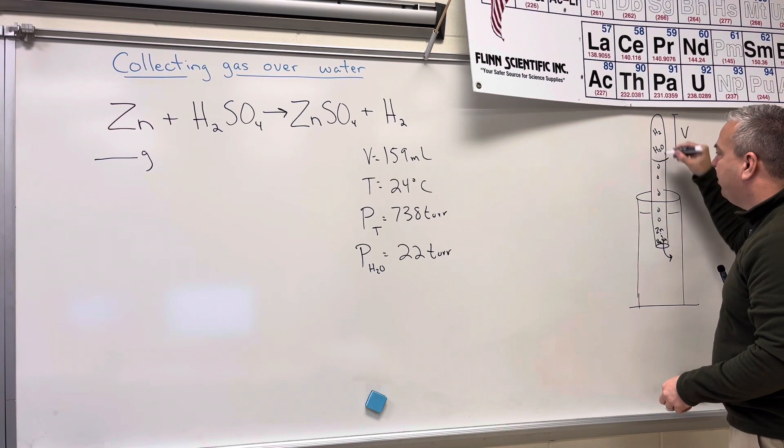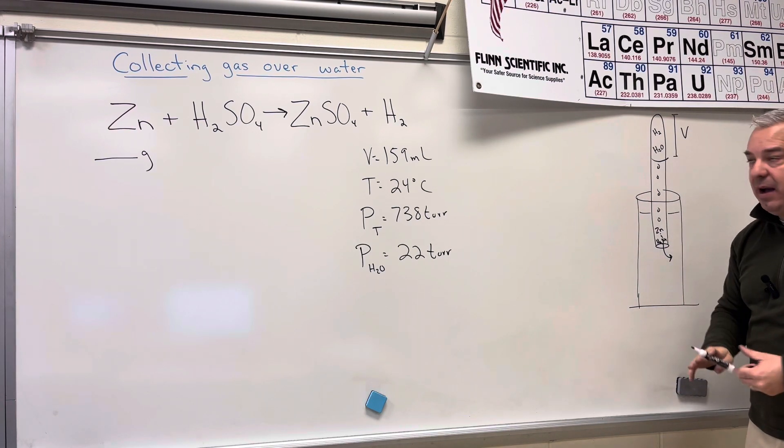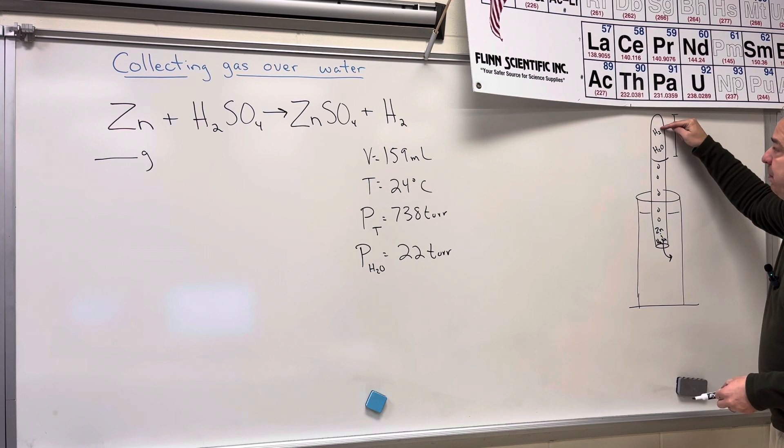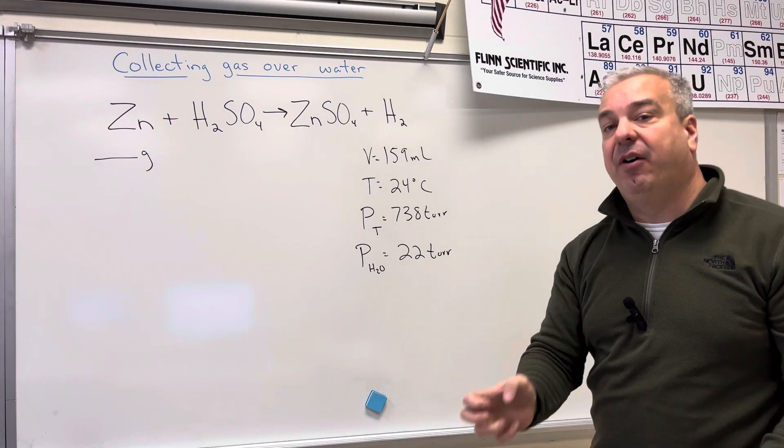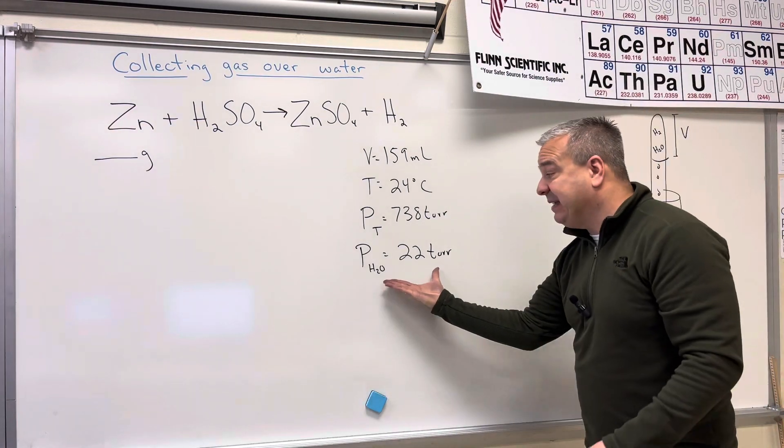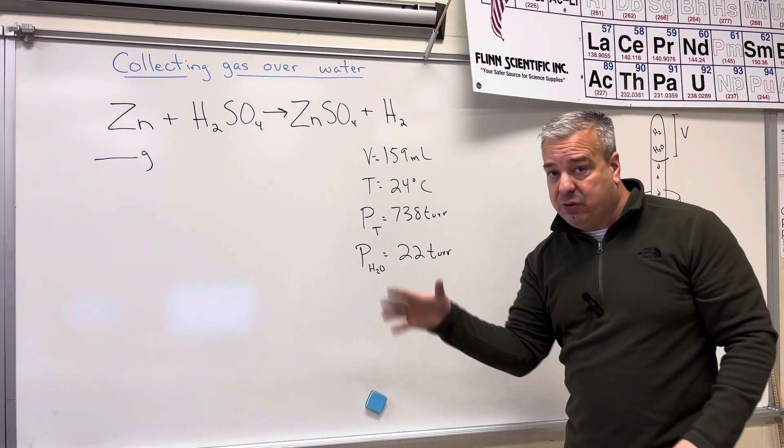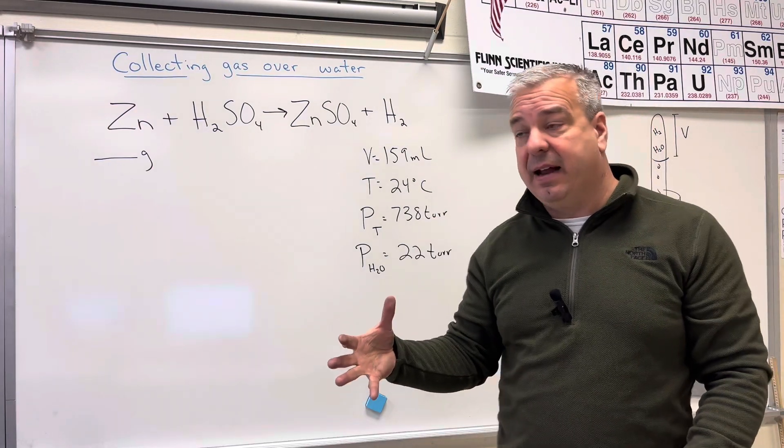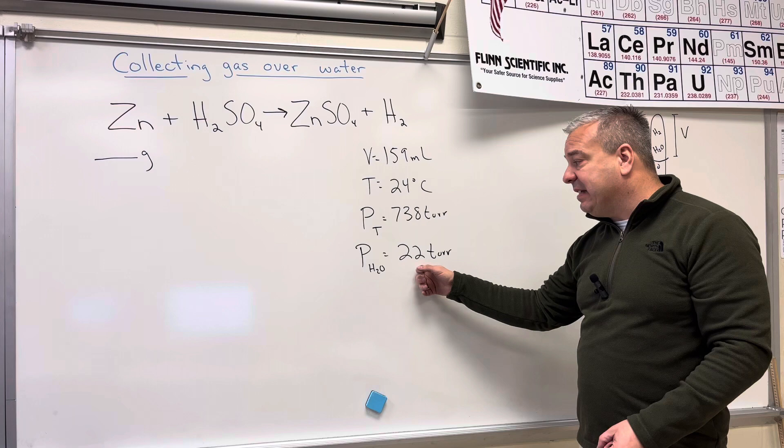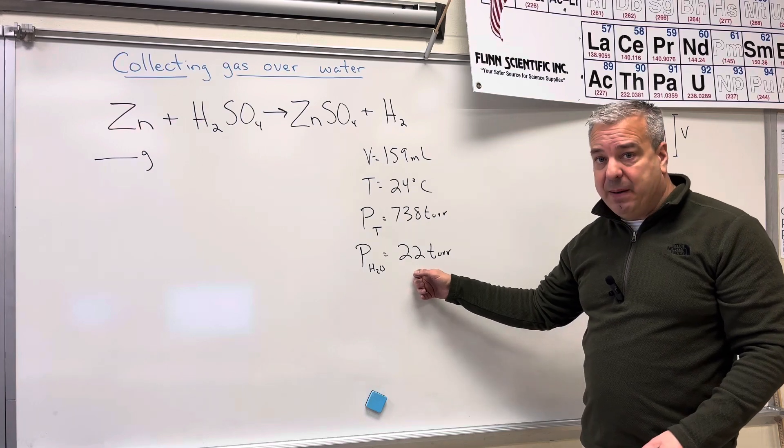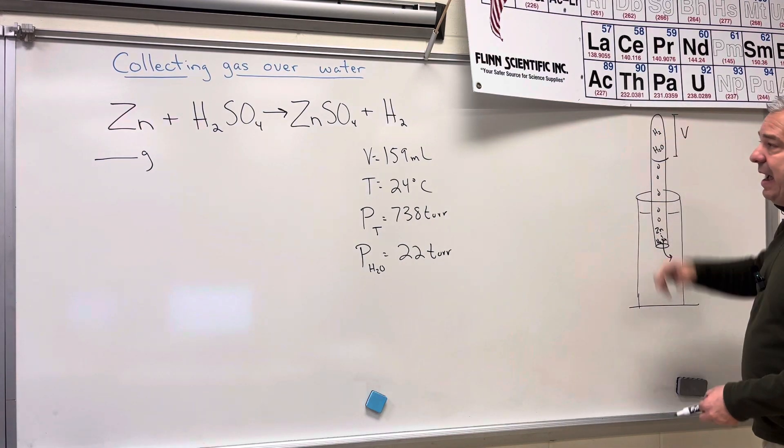So whenever you collect a gas over water, that gas is present, but so is some water vapor. And that's the detail that people overlook. Now, it's in the prompts. Sometimes you have to go to an appendix and look it up. But it's in the prompts. So it's really telling us you need to consider the water vapor in here with the hydrogen gas.